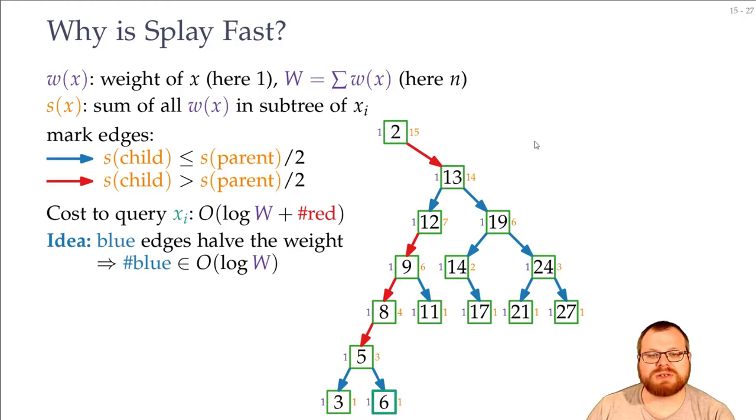For those red edges, it can be that the orange number only goes down by 1, like from here to here, or here to here, or here to here. And that is terrible, because that means there can be n of those red edges. And that means that one of these paths can be bad. And that is true, we can have long queries in this splay tree.